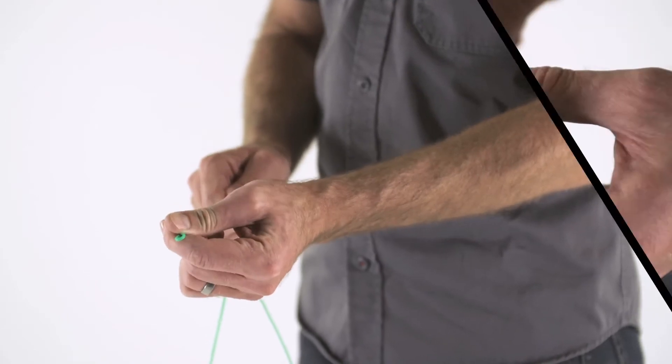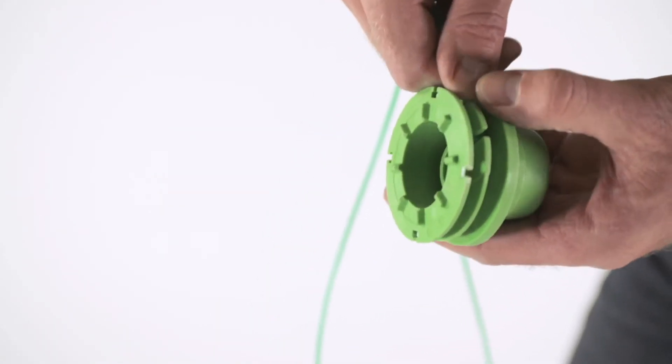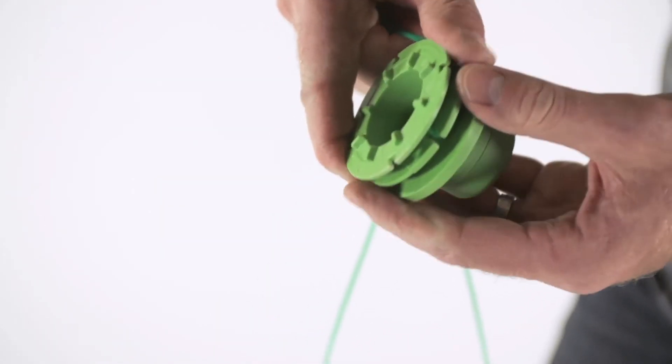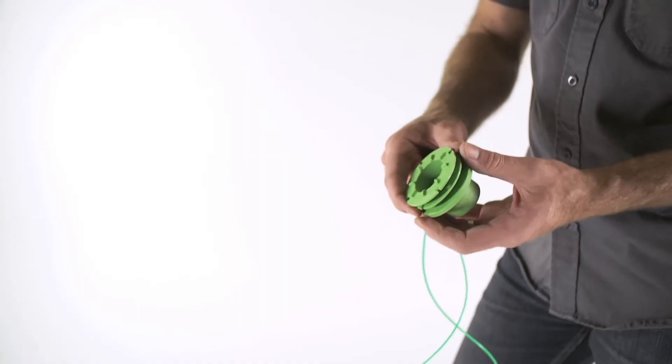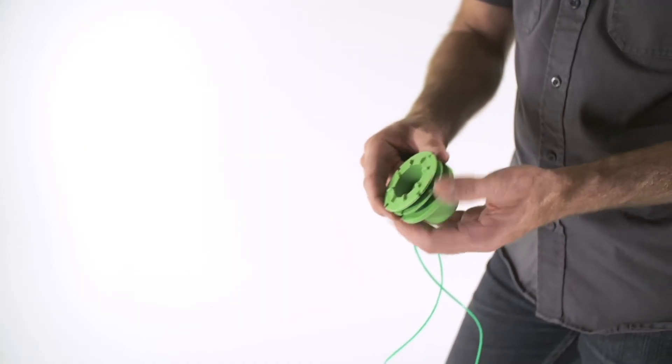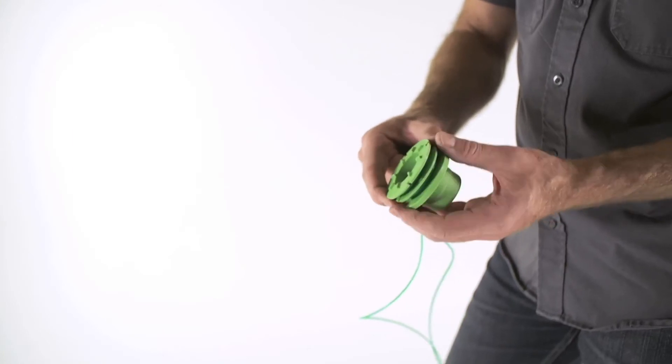Hook the folded end of the cutting line onto either of the slots in the spool and wind the line in the direction indicated on the spool. Winding the line in the wrong direction will cause the bump head to operate incorrectly.